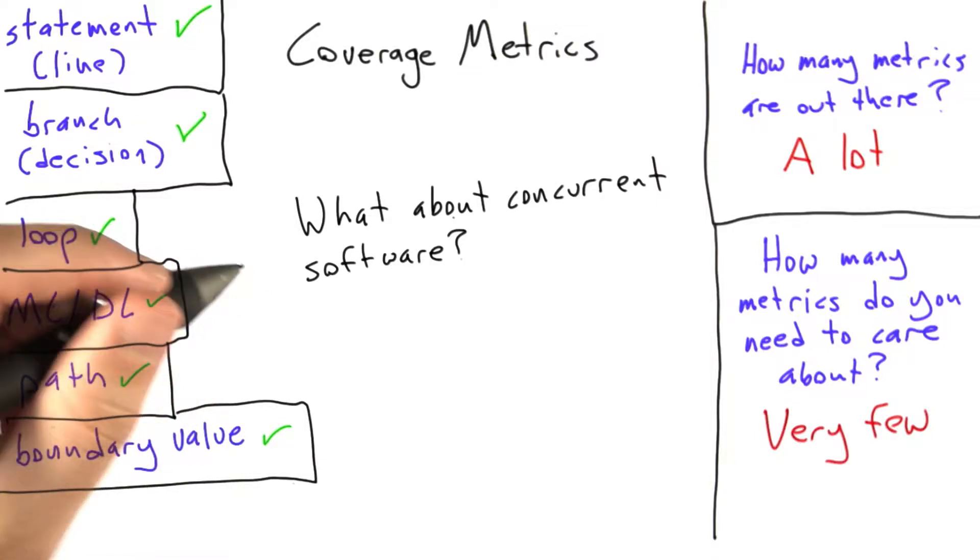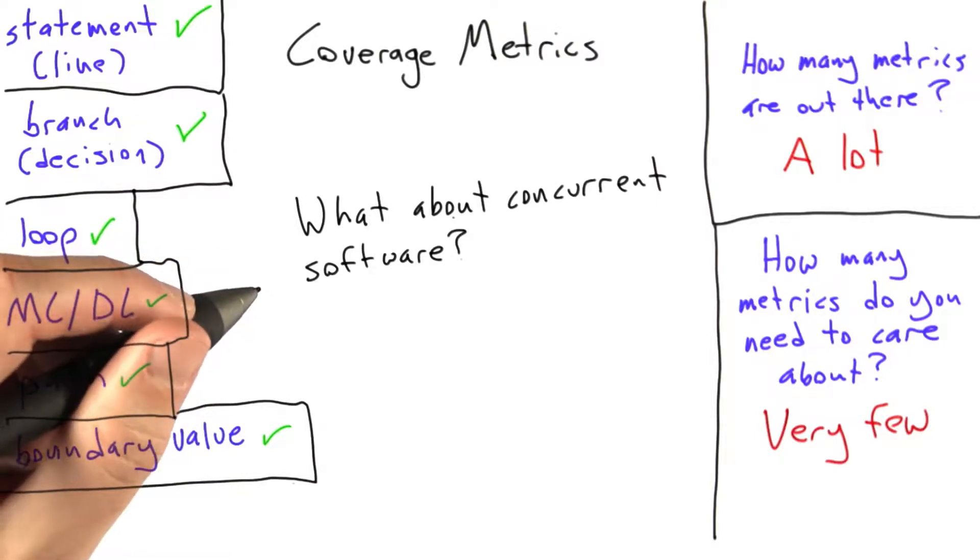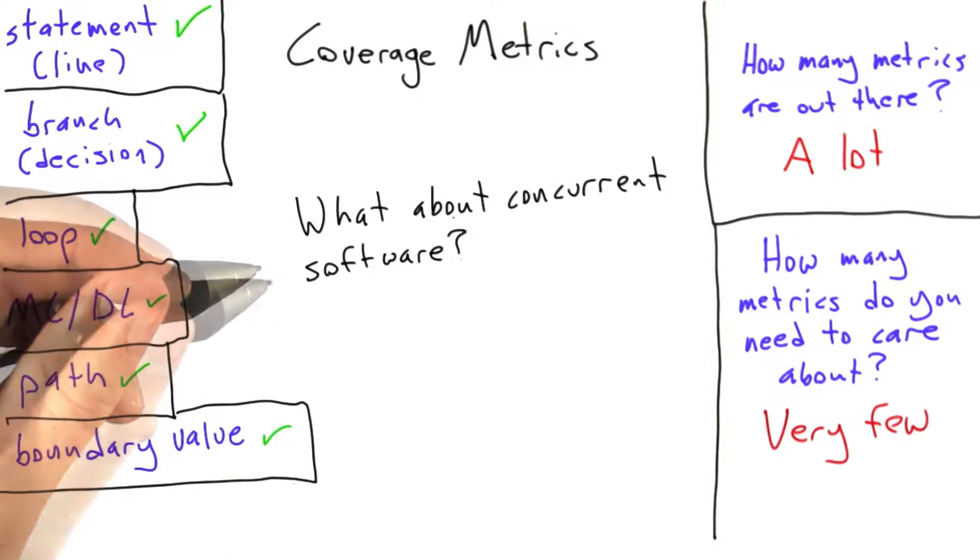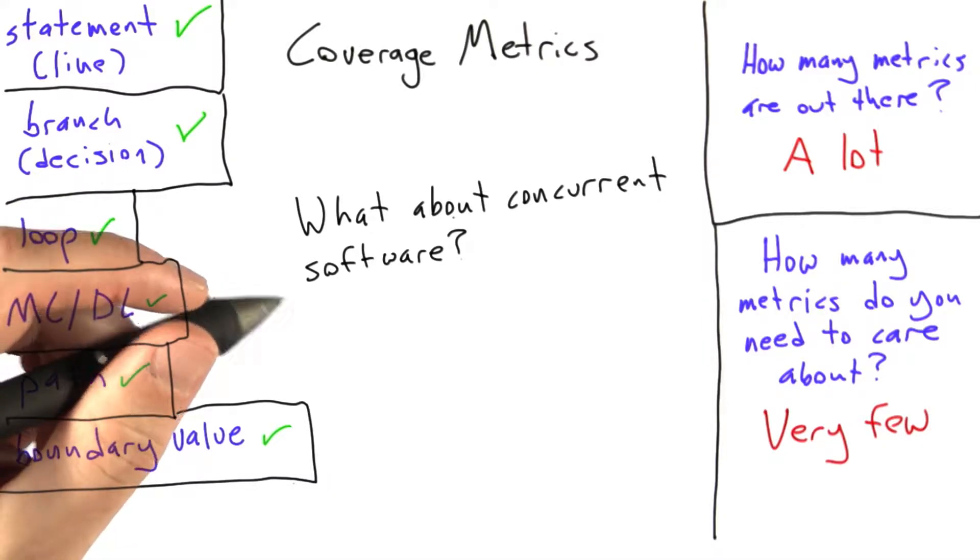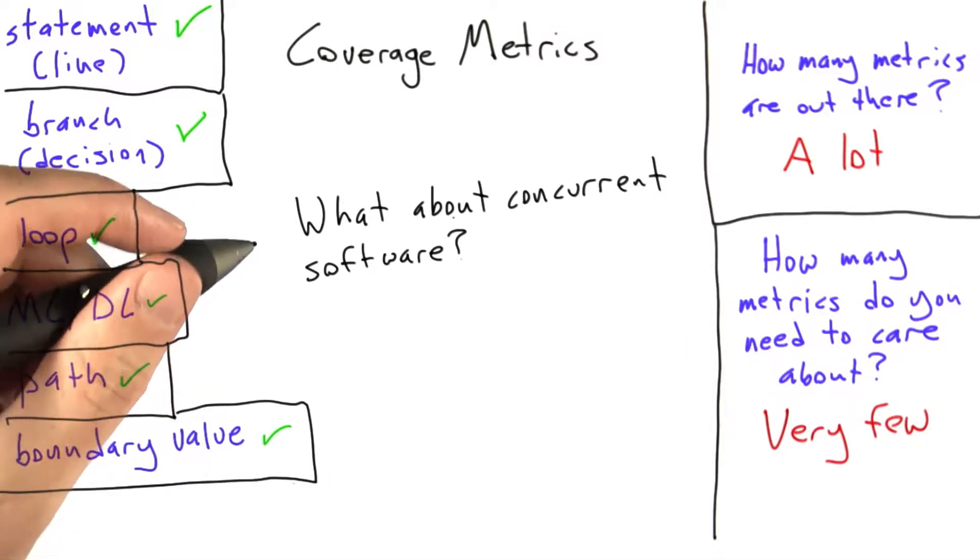First of all, hopefully it's clear that while applying sequential code coverage metrics to concurrent software is a fine idea, probably these aren't going to give us any confidence that the code lacks concurrency errors such as race conditions and deadlocks.